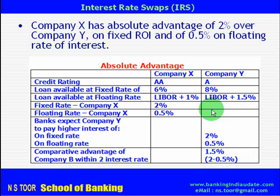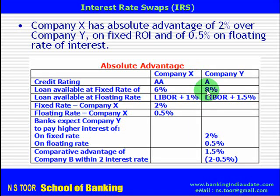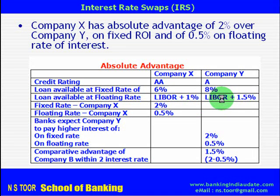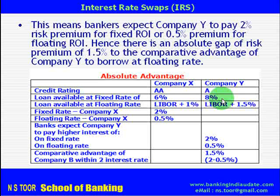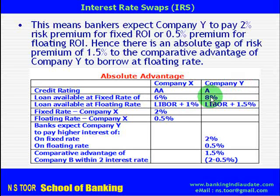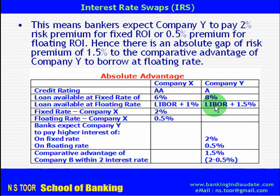From this, we can easily say that Company X has absolute advantage over Company Y of 2% for fixed rate lending and 0.5% for floating rate lending. This means the bankers of Company Y are charging a 2% risk premium on fixed rate loans and 0.5% risk premium on floating rate compared to Company X.